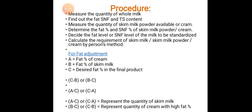To calculate the requirement of skim milk, skim milk powder, or cream by Pearson's method for fat adjustment: A = fat percentage of cream; B = fat percentage of whole milk; C = desired fat percentage in the final product. The ratio (C − B) : (B − C) gives the parts of skim milk and cream. (C − A) and (C − B) represent the quantity of skim milk; (B − C) and (C − A) represent the quantity of cream with high fat percentage.